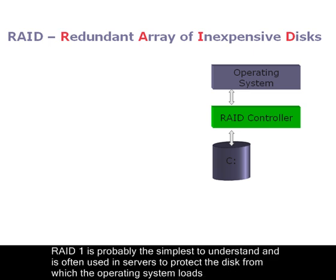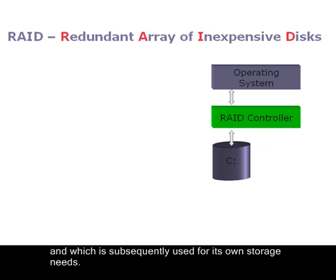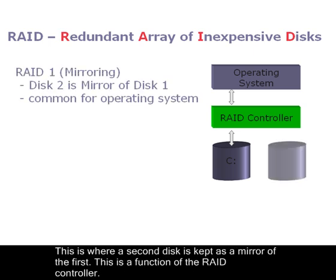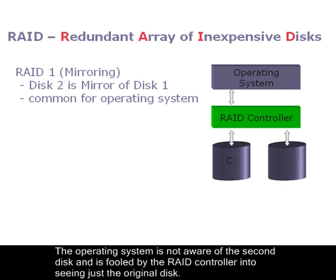RAID 1 is probably the simplest to understand and is often used in servers to protect the disk from which the operating system loads and which is subsequently used for its own storage needs. The descriptive term for RAID 1 is mirroring — this is where a second disk is kept as a mirror of the first. This is a function of the RAID controller; the operating system is not aware of the second disk and is fooled by the RAID controller into seeing just the original disk.